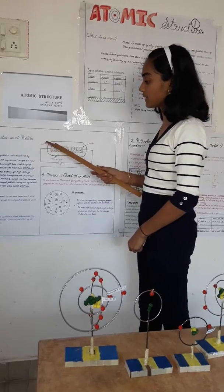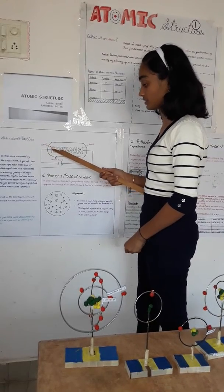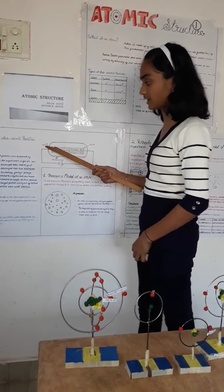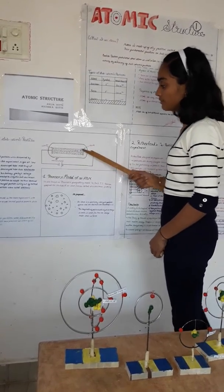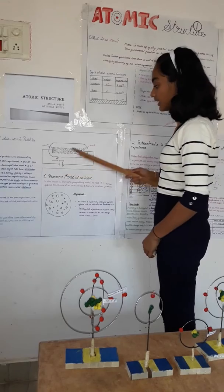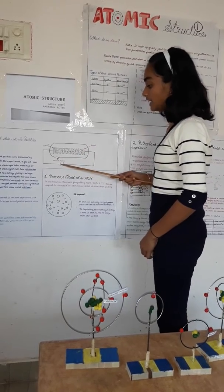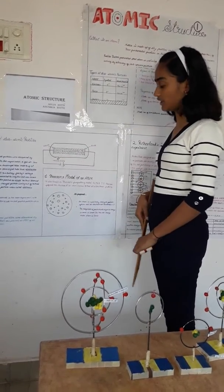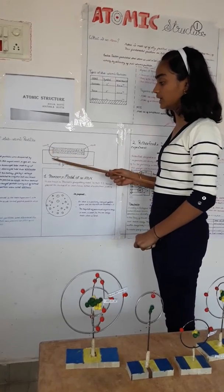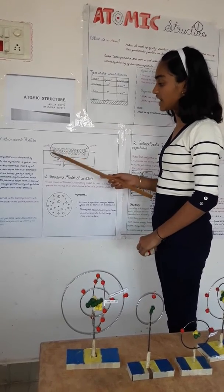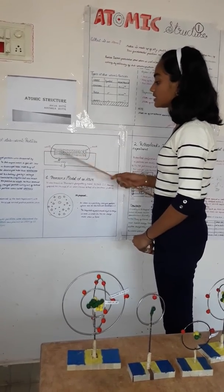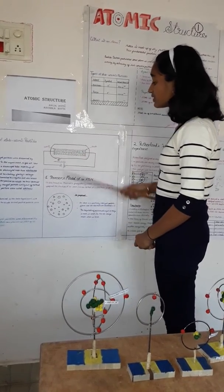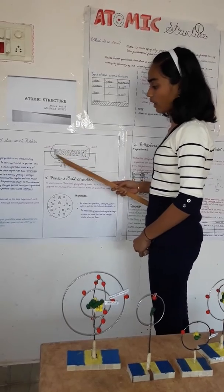Negatively charged electrodes were called cathode and positively charged electrodes were called anode. They were connected to a high voltage supply. He observed negatively charged particles coming from cathode towards anode. These negatively charged particles were known as electrons.